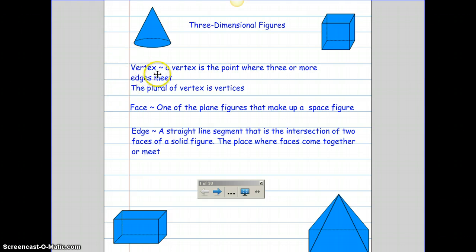The first word is vertex. A vertex is the point where three or more edges meet. And if you look, here is an edge, this is an edge, and this is an edge. Where those three meet is a vertex. The plural of vertex is vertices. As you can see, this solid has lots of vertices.